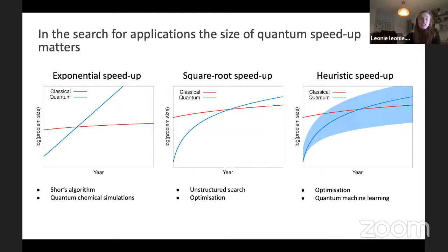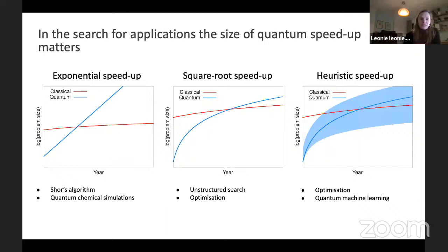Very clever mathematicians and physicists have succeeded in designing algorithms that use this wonderful property — quantum computers being in so many states at the same time and being able to extract information from it. But this is really, really hard to do. There are only a finite number of quantum algorithms that give you a so-called quantum speedup — any advantage over classical computers. Not all speedups are made the same.